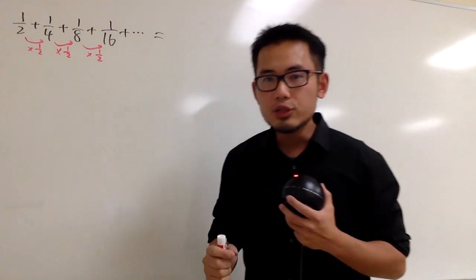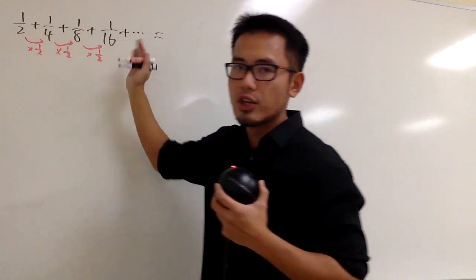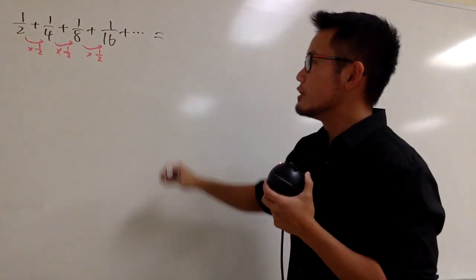As you can see, this is geometric because every time we multiply by 1/2 to get to the next term. And the r, the common ratio, is 1/2, so we know this converges.